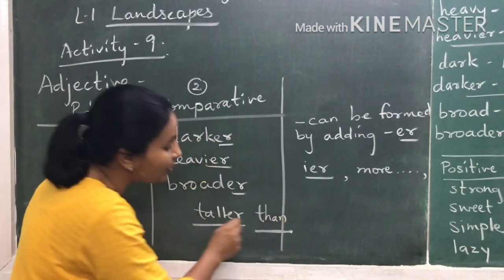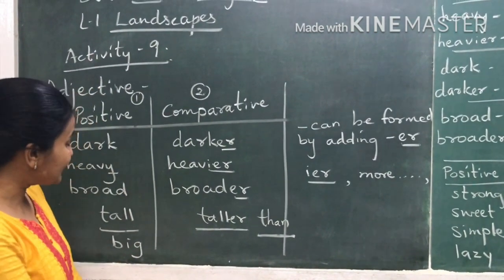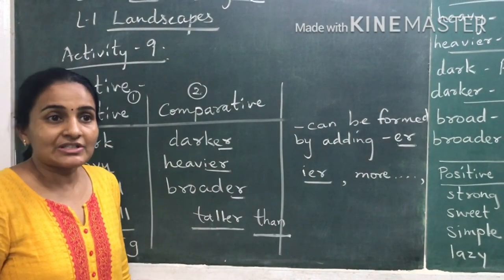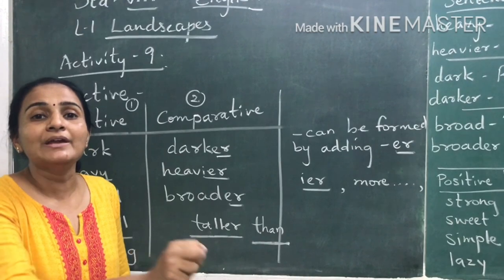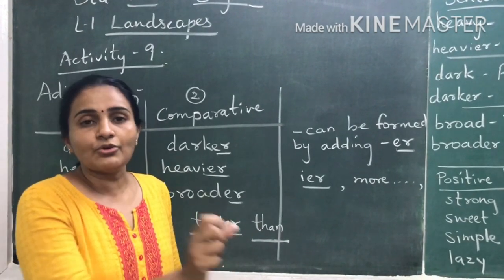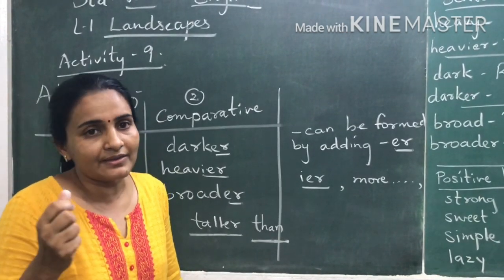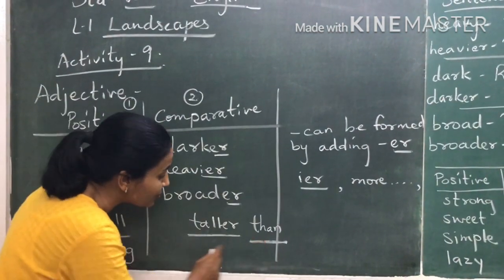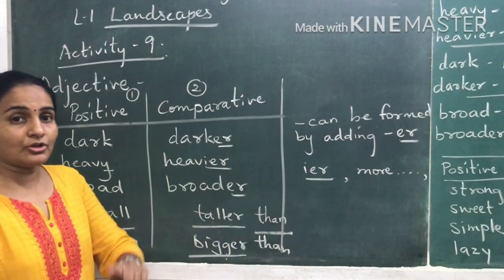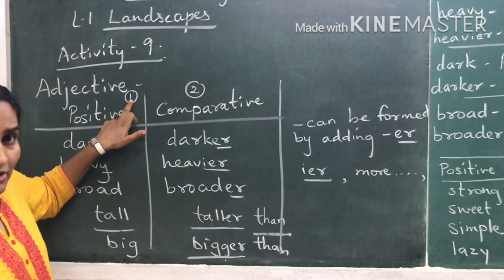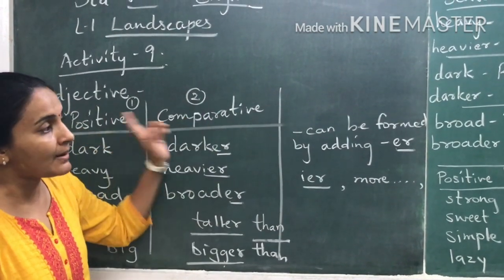For comparative degree, always remember it is followed by 'than.' For example, if comparing two cities — Mumbai and Ahmedabad — you say 'Mumbai is bigger than Ahmedabad.' When talking about one person or one thing, use positive degree. When talking about two people or two things, use comparative degree.